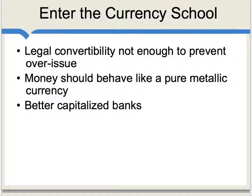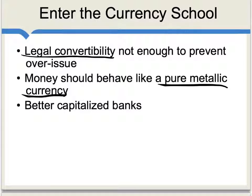Into this environment entered the so-called Currency School. The Currency School understood full well that something was wrong, though not all of their recommendations correctly addressed the actual problems. Members of the Currency School typically believed: first, that legal convertibility of banknotes into gold was not enough to prevent England's problems, and in particular the problems of an overissue of banknotes. Second, their overall vision was that money — paper money, this mixed system of currency and deposits — should behave like a pure metallic currency, as if everyone were simply passing around pieces of gold.